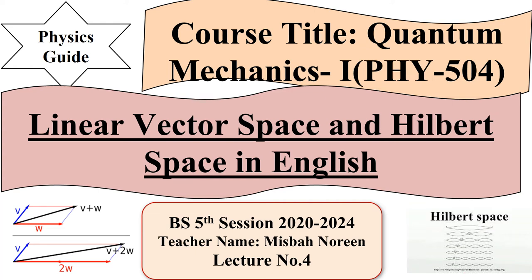Assalamu alaikum dear students. This is the fourth lecture of Quantum Mechanics 1. In this lecture we discuss linear vector space and Hilbert space. The first three lectures covered the historical background of quantum mechanics — why we study it — and phenomena such as the Davisson experiment, photoelectric effect, and Compton effect.